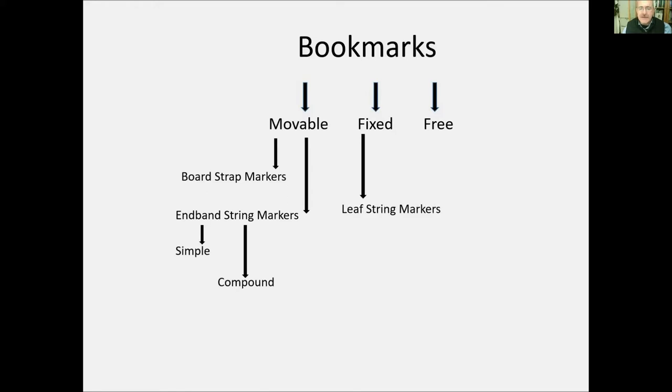And then further on, movable bookmarks can be divided into board strap markers and endband string markers. We will see them in detail, so don't panic for those who are not familiar with the terms. And further on, endband string markers can be divided into simple and compound. Fixed bookmarks, on the other hand, can be divided into leaf string markers and leaf tab markers. And then free, I haven't been able to—well, I found very few free bookmarks in the collection of the monastery, and therefore there is no way to classify anything really. Just two words about terminology here. I'm using three words to describe or name all these different bookmarks. The first word describes the part of the book where the bookmark is attached. So it can be a board, an endband, or a leaf. The second part describes the form of the marker itself—it can be a strap, a string, or a tab, as the title of my contribution says. And then, of course, the third word is the word marker.